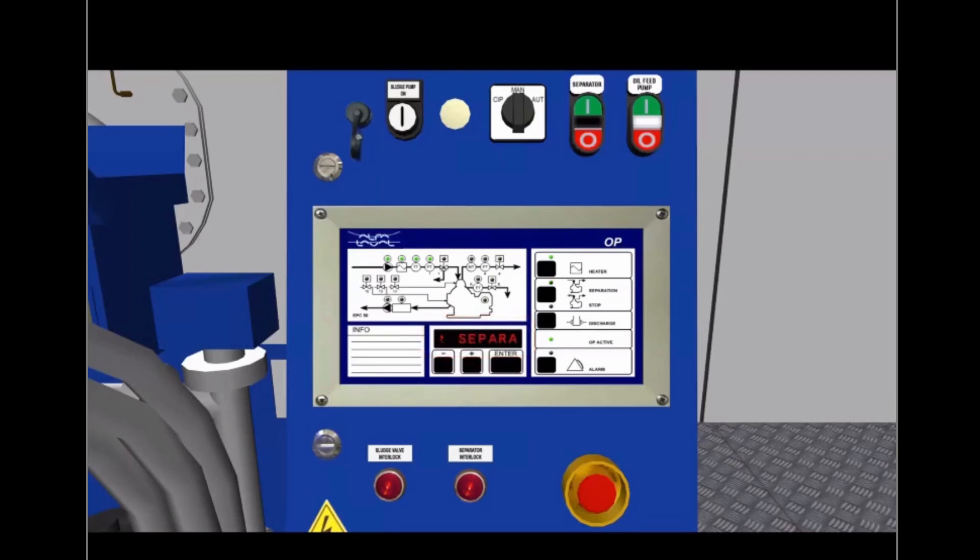Push the separator start switch. The separator speed and the message 'wait' are shown alternately on the display until the separator is at full speed. It takes some time for the bowl to be accelerated to full speed.